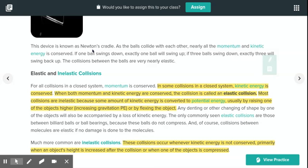However, most collisions are inelastic. Just like when two things collide together, there will be some sort of deformation. So most collisions are inelastic because some amount of kinetic energy is converted to potential energy. Potential energy is energy that's stored inside. Usually by raising one of the object higher or by flexing the object. That just means it makes the other object move up or deformation.